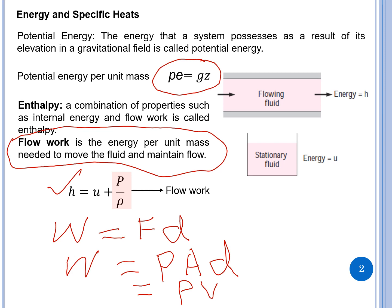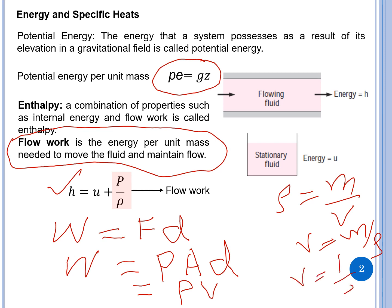Density is mass to volume ratio, so volume equals m over rho. For a unit mass, volume is 1 over rho. When we substitute this unit mass volume into the work expression, it becomes p times 1 over rho, which is basically flow work p/ρ.